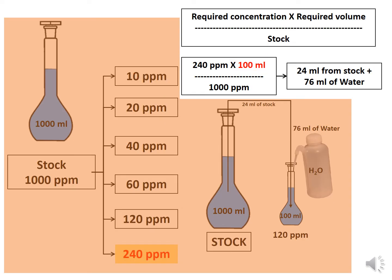If you need to prepare 240 ppm, the same formula is applied: required concentration 240 ppm, required volume 100 ml, divided by stock 1000 ppm. We get a volume of 24 ml. Taking 24 ml of solution from the stock and mixing with 76 ml of water gives 240 ppm of required concentration.